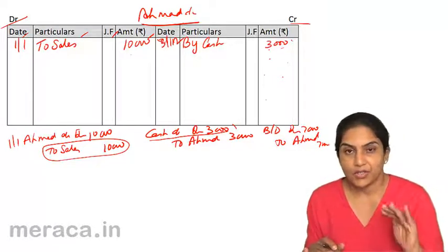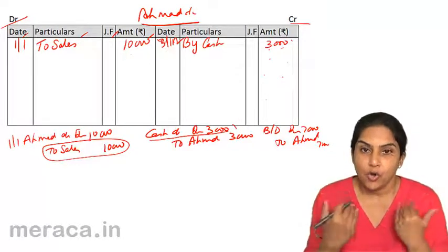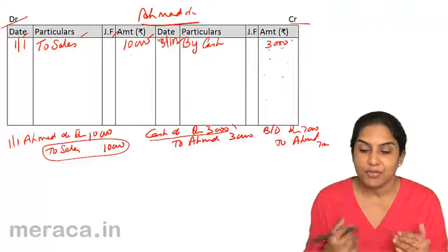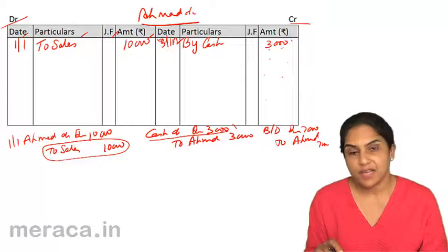This means, Ahmad has a debit balance, or Ahmad owes me. There is an amount receivable from Ahmad amounting to 10 minus 3, 7,000.